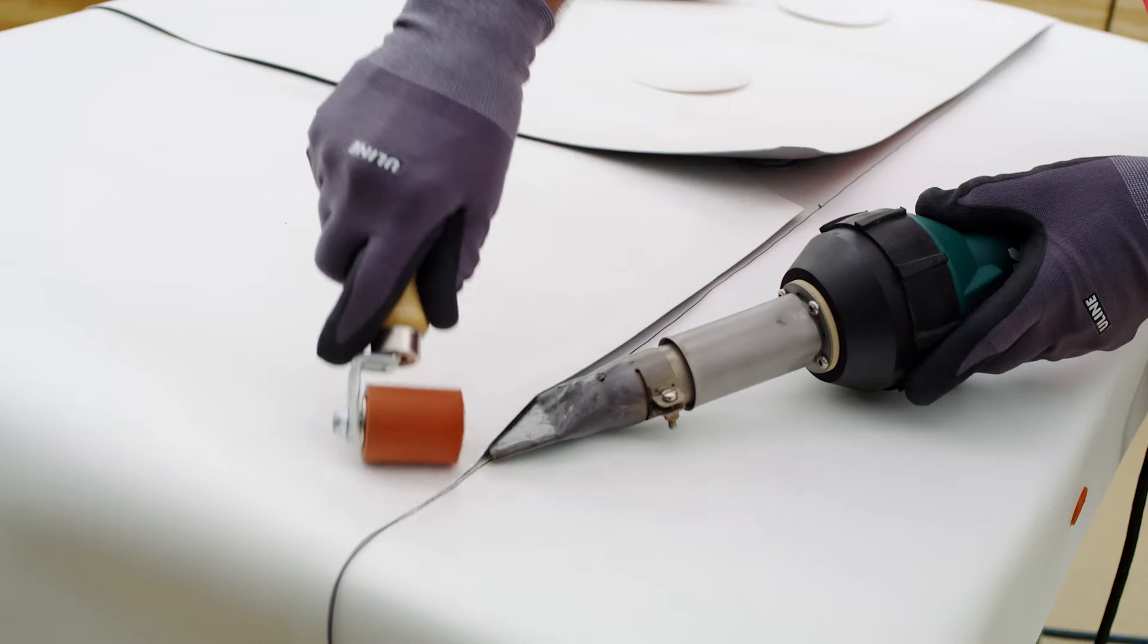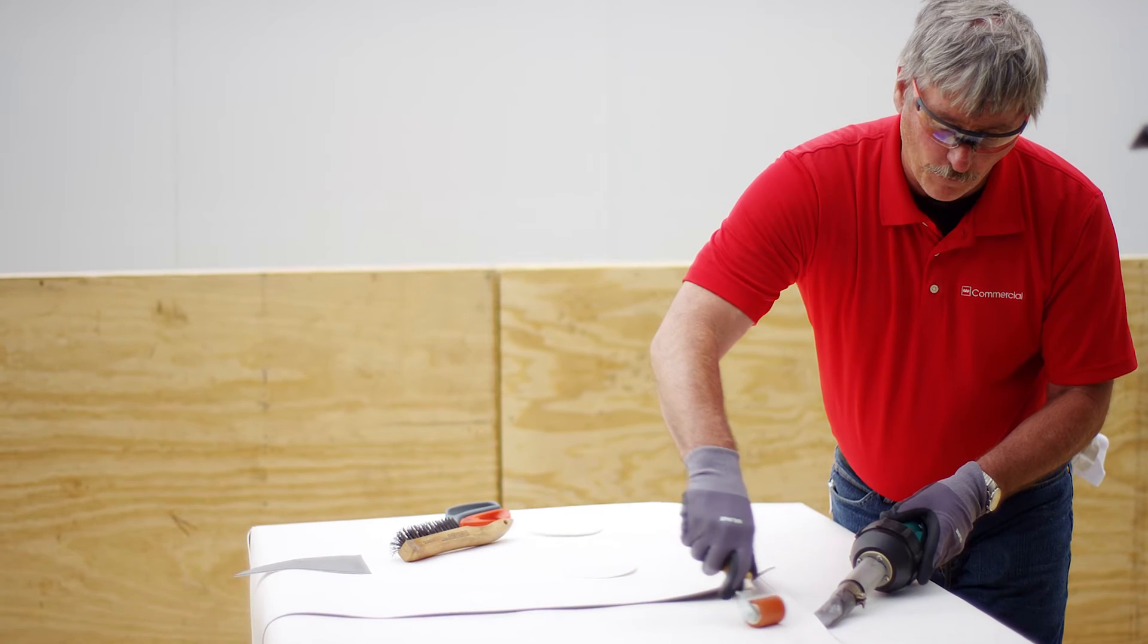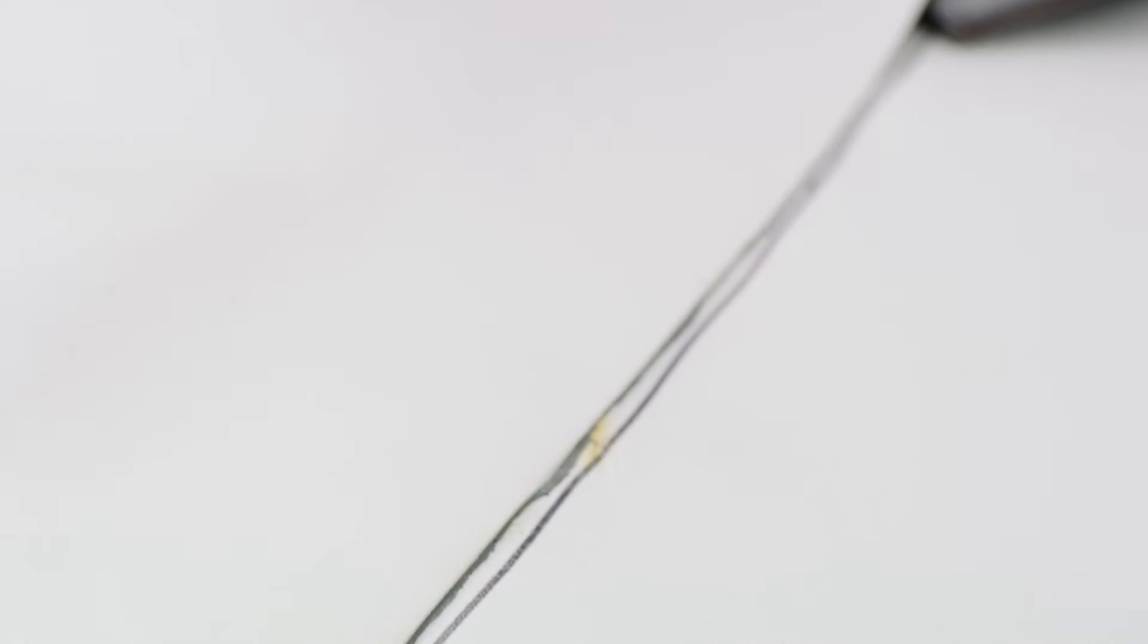You also see we have our seam attachment in here also. Again, we're looking for bleed out. And you can actually overheat it. As you can see right there, I'm on the verge of overheating. That means I got to do one or two things. I got to speed up or I got to turn my gun down.